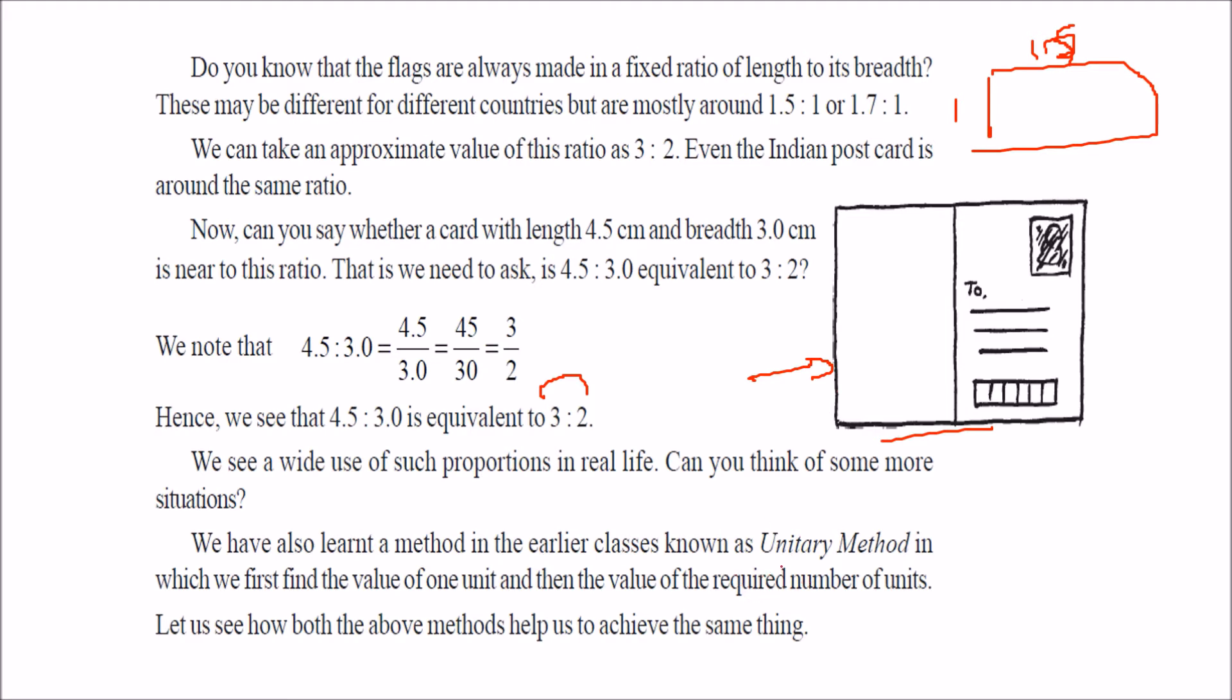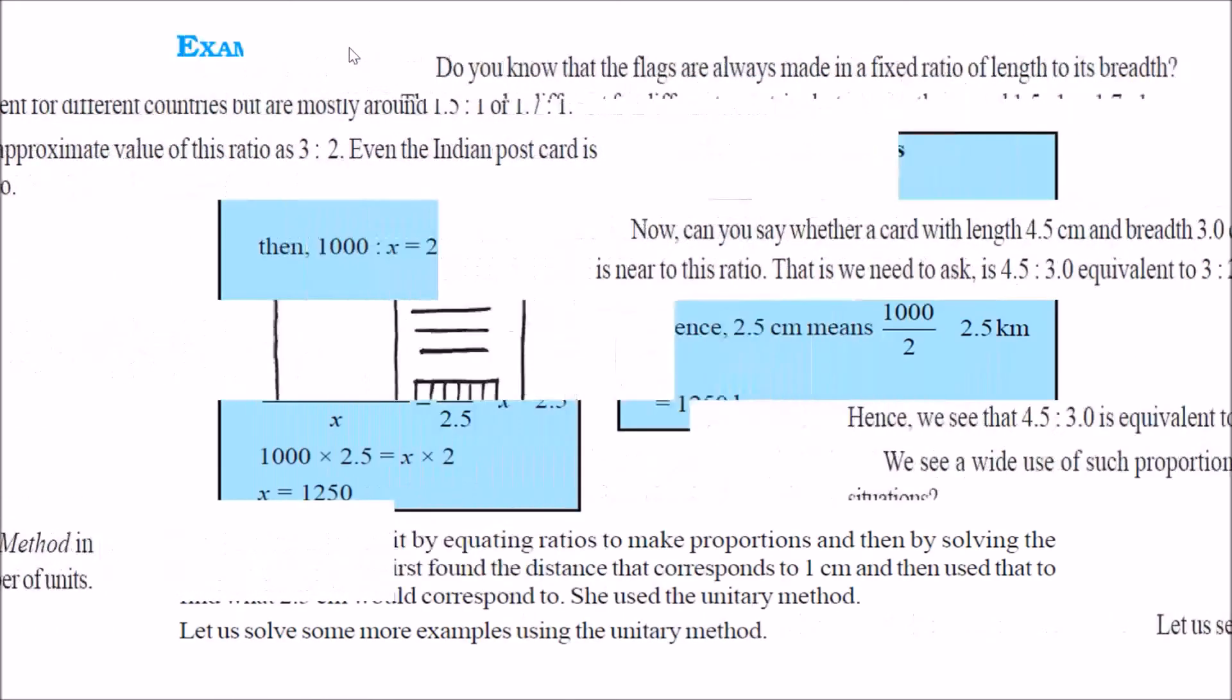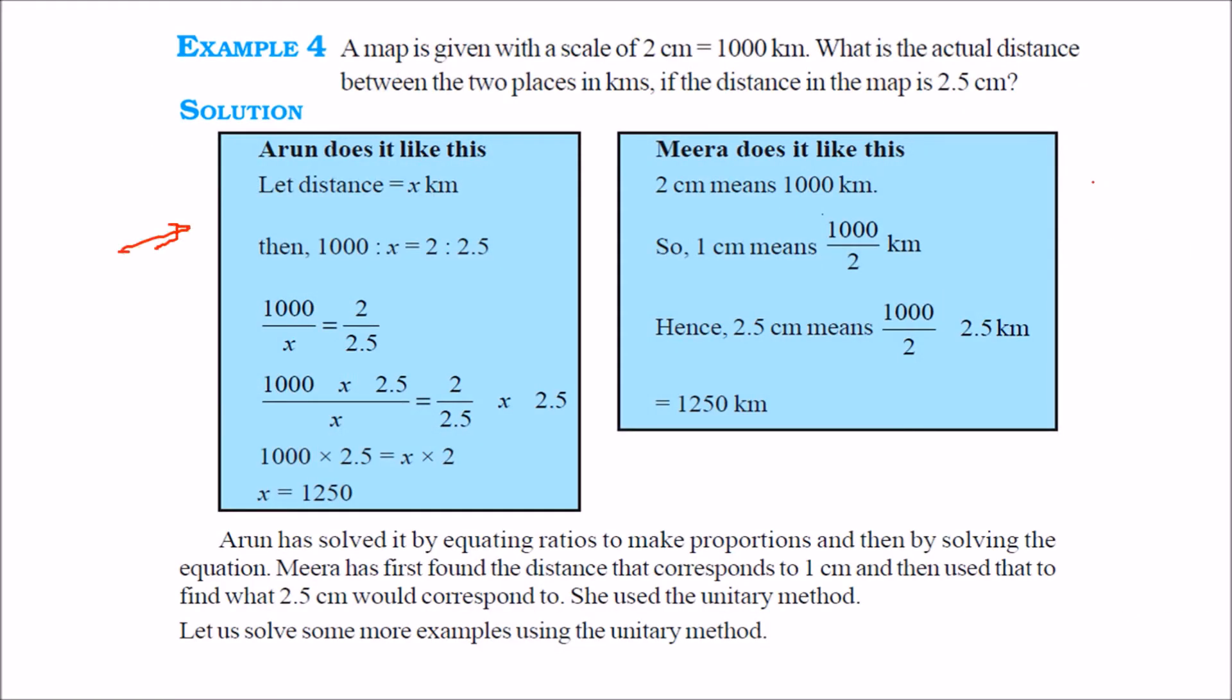Unitary method. How we can apply unitary method? Unitary method, let us see. We will try to explain things with two scenarios. Aruna does the same example, Mira does the same example. So the question is, map is given with a scale of 2 cm is equal to 1000 km. What is the actual distance between two places in km? The distance in the map is 2.5 cm. So how does Aruna do it?